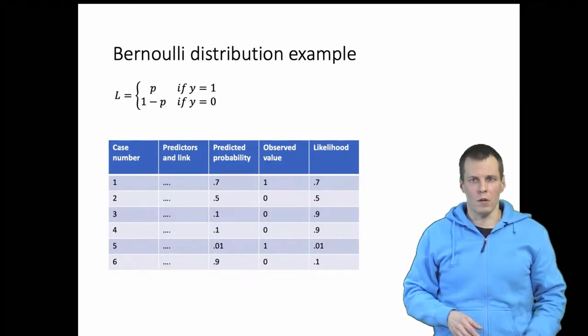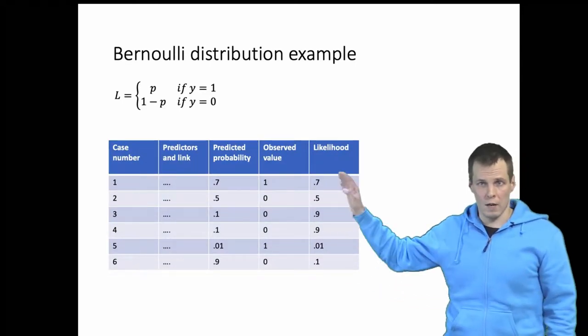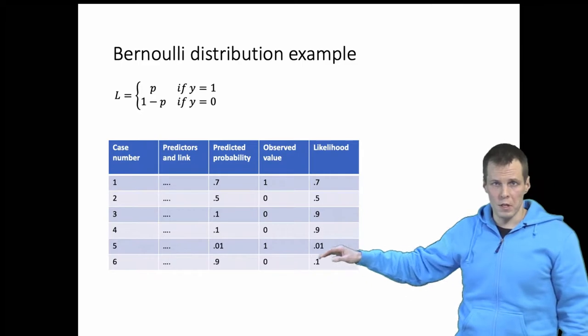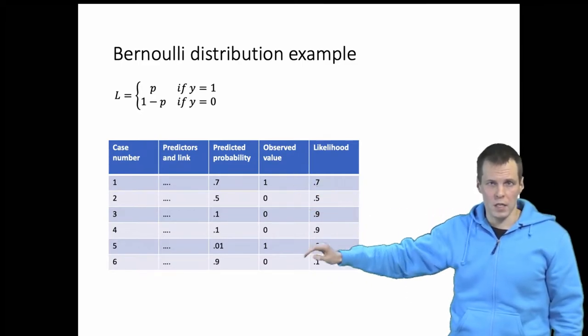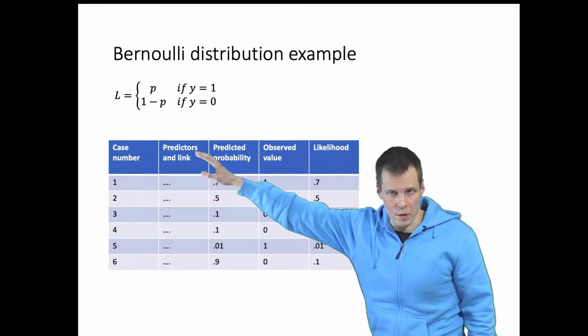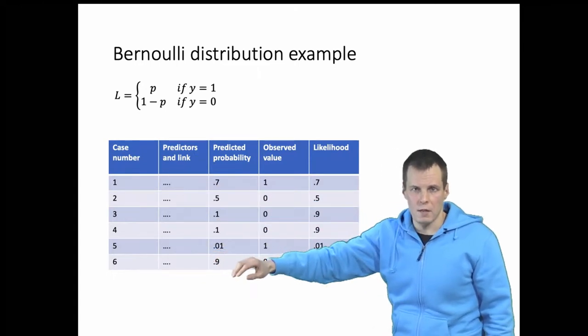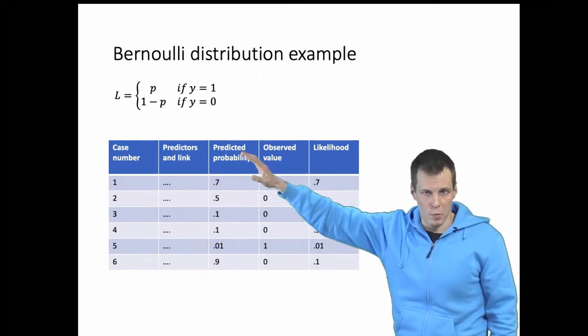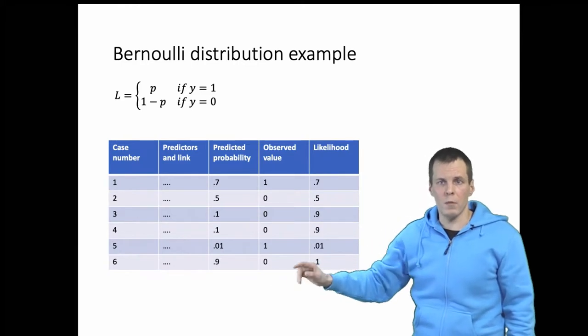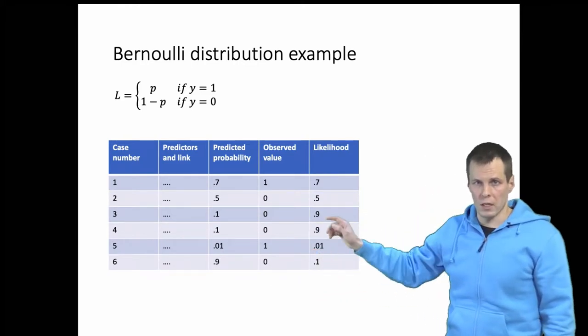Let's take a look at the Bernoulli distribution. So here we have some observations. The dependent variable is ones and zeros. We have a model here, some predictors and some link function that give predictive probabilities between one and zero, and then we calculate the likelihood using this kind of equation.